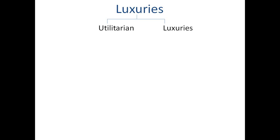Now we divide or classify the luxuries into two parts. The first one is the utilitarians and the second one is the luxuries. Utilitarians means the objects which we use in our daily life. And luxuries means the items, the objects we use in our life rarely.